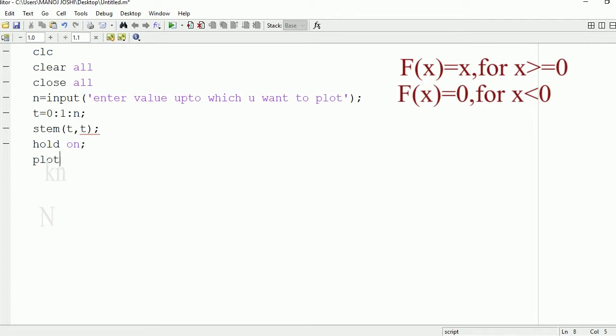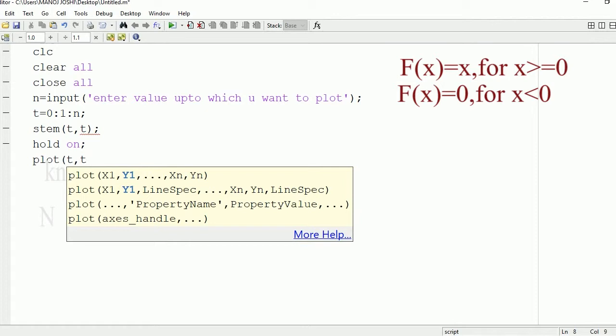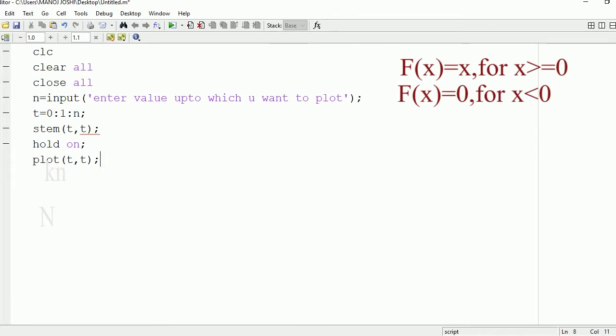So write hold on. Now we're going to plot so that we can connect all the sample values together. So write plot(t,t). This is basically to connect all the sample values which we have drawn using stamp command.